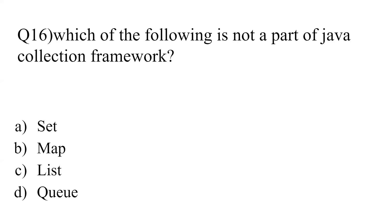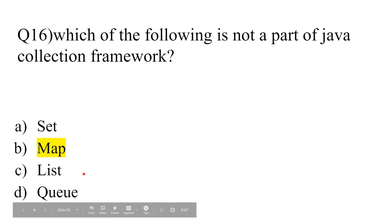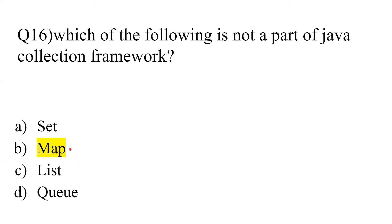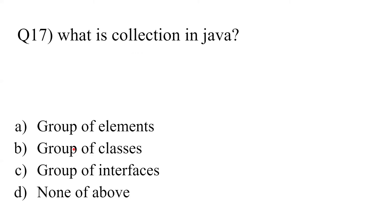Question 16: 'Which of the following is not a part of the Java collection framework?' The answer is Map. Set, List, and Queue are interfaces present under the Java collection framework. Map is excluded because the collection framework was developed under the paradigm that it is a collection of objects, whereas Map creates key-value pairs — making it conceptually separate from the collection framework interfaces.